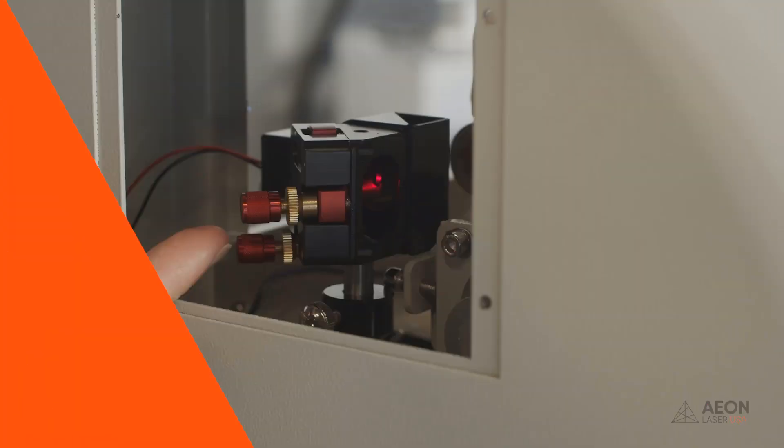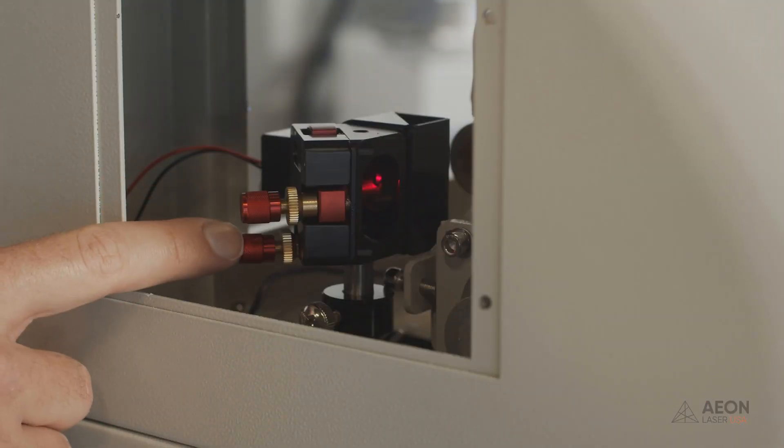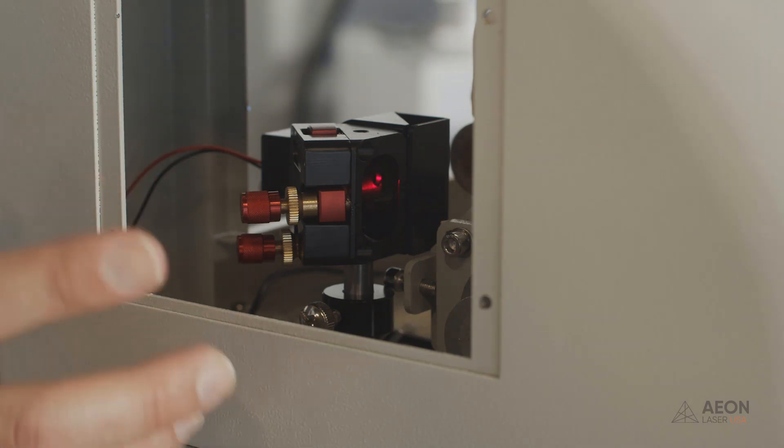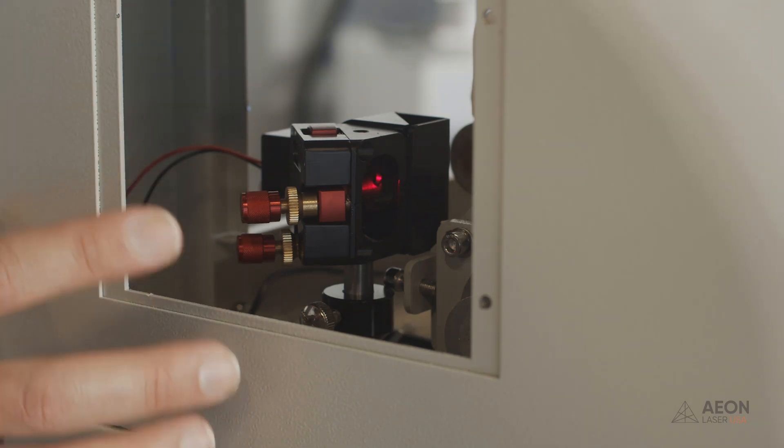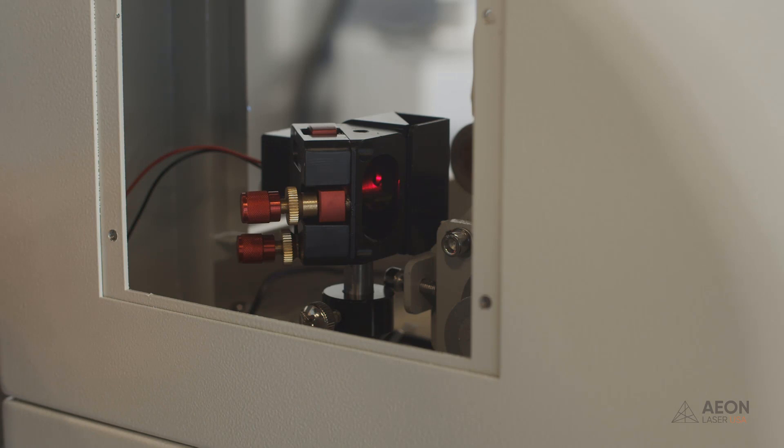Alright, this is mirror one and these are the adjustment knobs on mirror one. The first thing we want to do is we want to figure out which way we need to make the adjustment. Now, if you look at our previous burn, it was up high and it was over to the left. So that means I'm going to have to use both knobs.